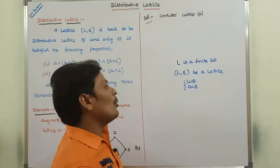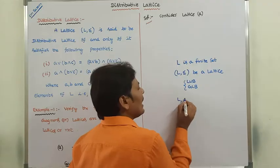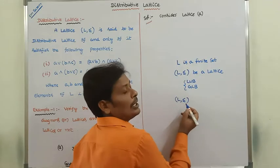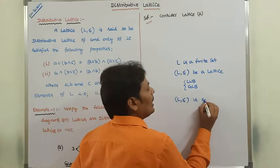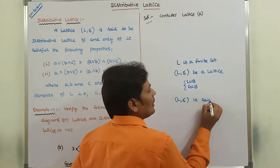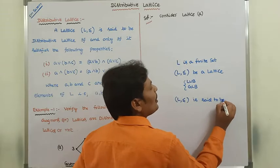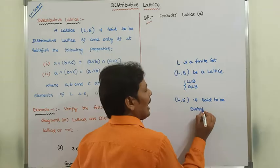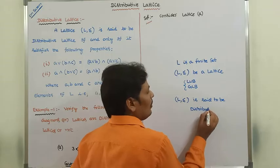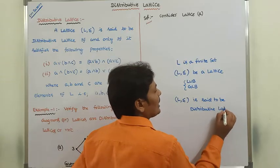Now, this lattice (L, ≤) is said to be a distributive lattice by satisfying two properties.